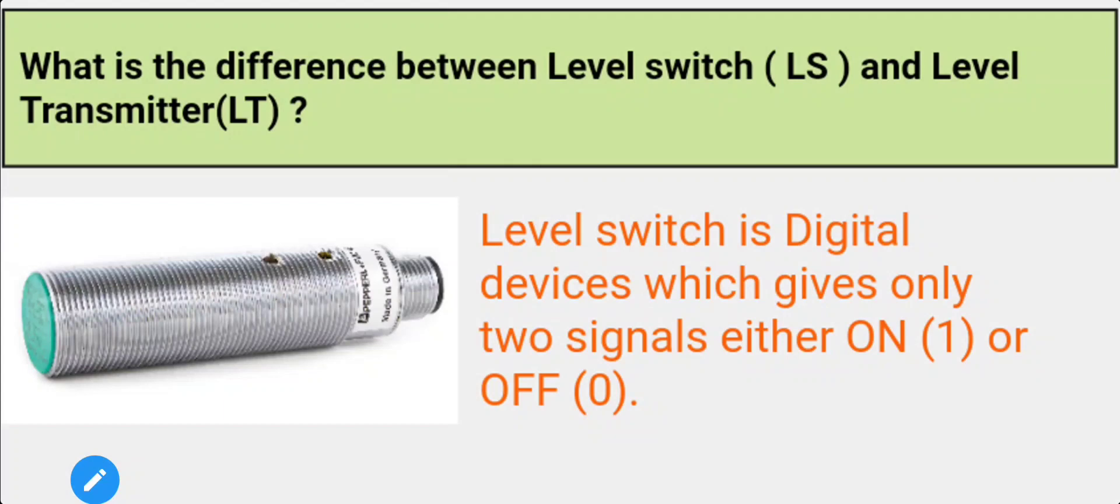Let's see, if we have a reactor or vessel like this, let's say this is a vessel. If I have a high level limit switch and a low level limit switch.